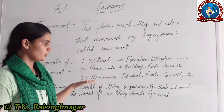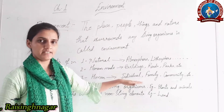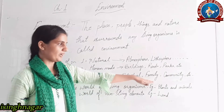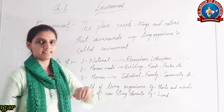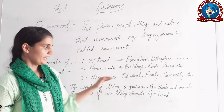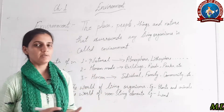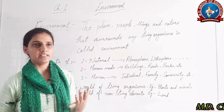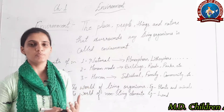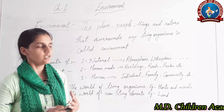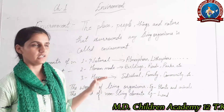The third component is human environment. It includes an individual, family, community, religion, etc. An individual, their family, community, caste, religion, and culture they belong to — all of these are part of the human environment.